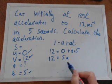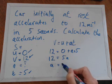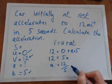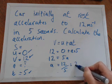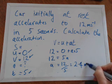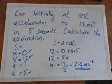Or 12 equals 5A. And then of course A is equal to 12 divided by five, and that gives us 2.4 meters per second to the minus two.